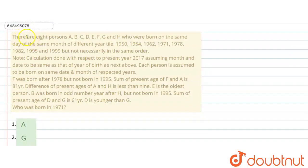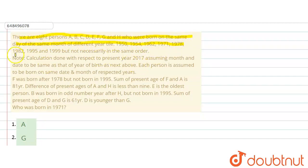The question says there are 8 persons — A, B, C, D, E, F, G, H — who were born on the same date of the same month but in different years: 1950, 1954, 1962, 1971, 1978, 1982, 1995, and 1999, but not necessarily in the same order.